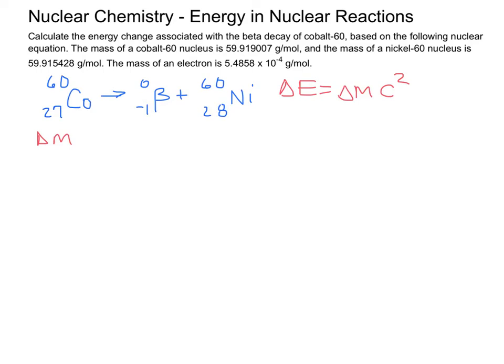In this case, the products are going to be the nickel-60, which is 59.915428 plus the electron, which is 5.4858 times 10 to the negative fourth grams per mole. And, then the cobalt-60 on the reactant side is 59.919007.